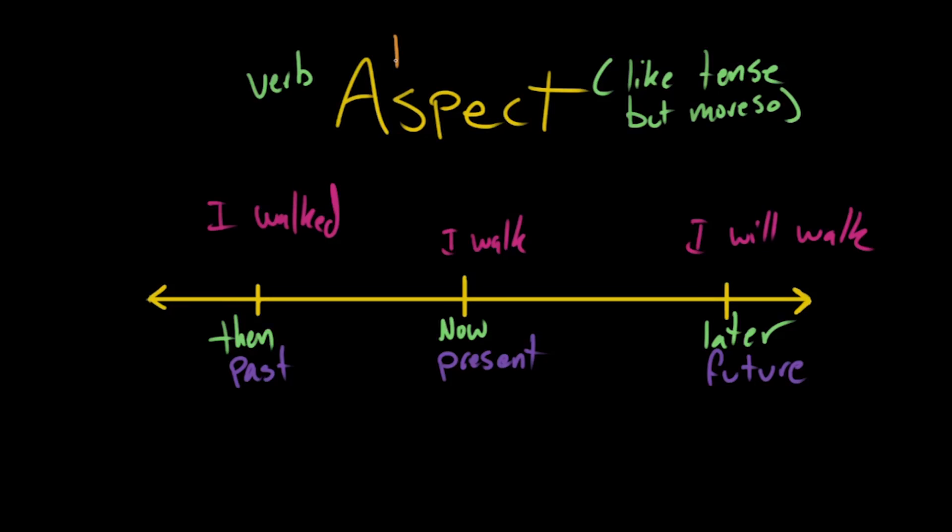Hello, grammarians. Let's talk about the progressive aspect. We talked about the simple aspect as something that is just the most bare form. It's what you see here: I walk, I will walk, I walked.